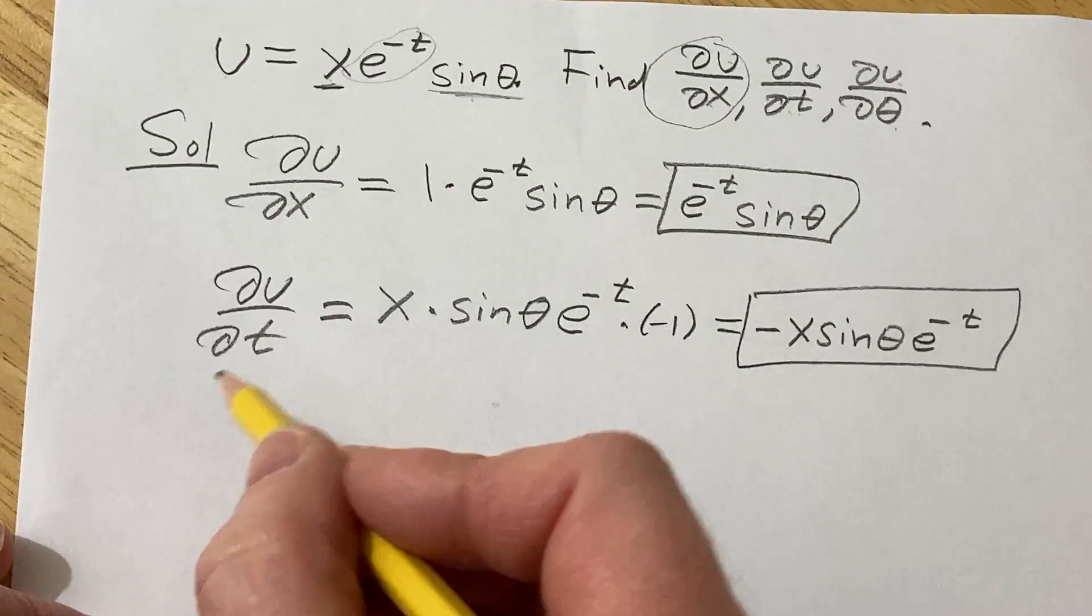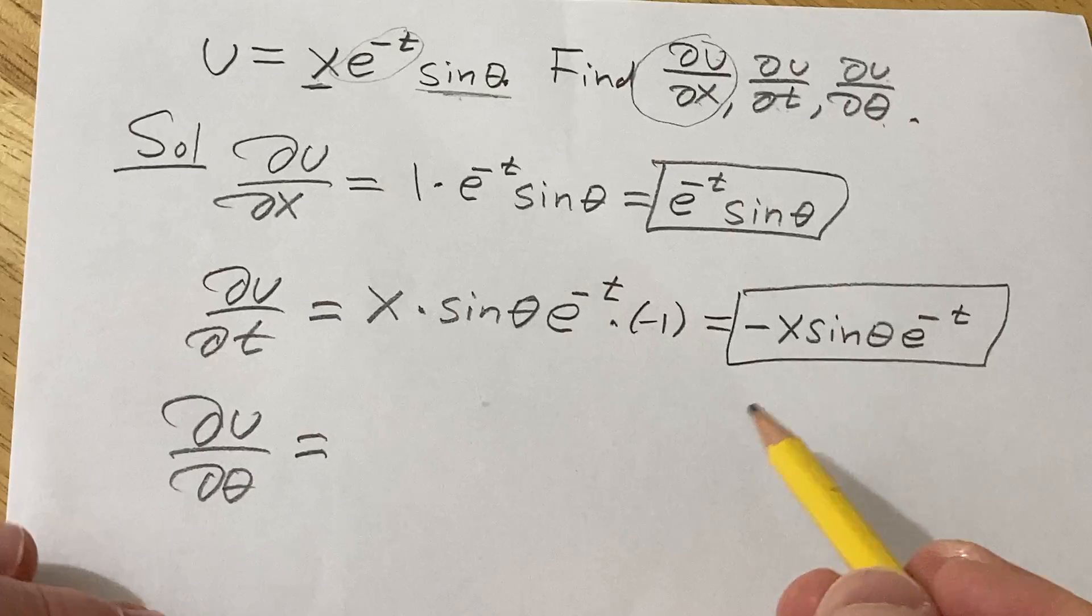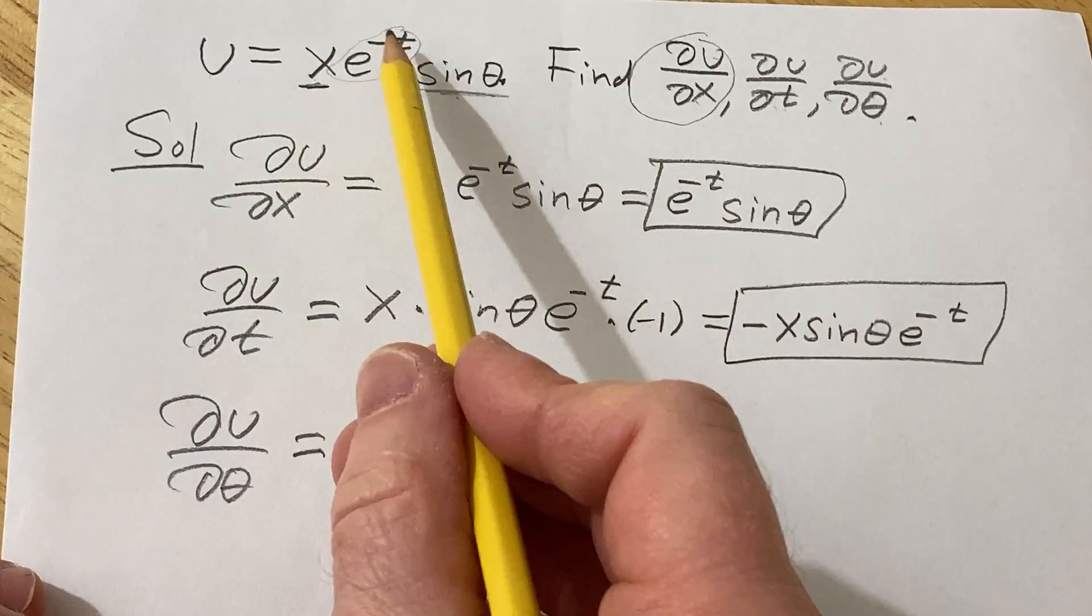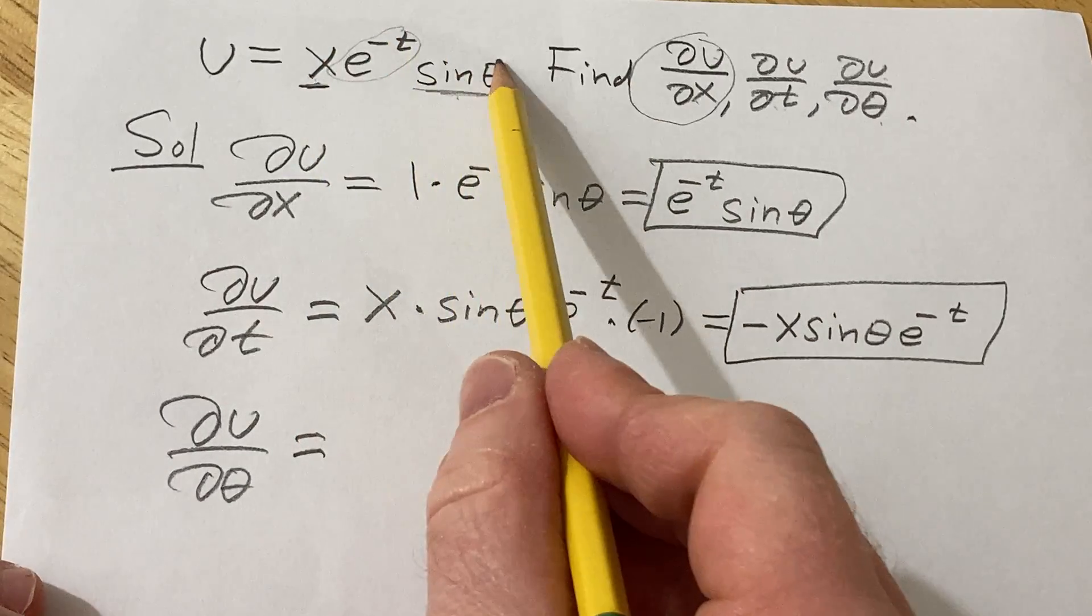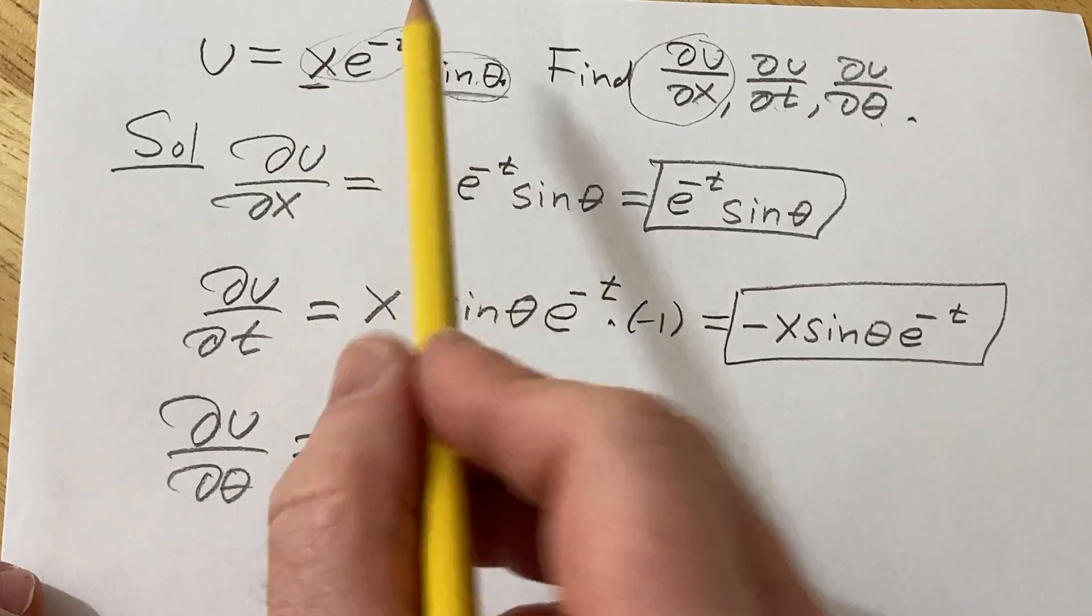The last one is ∂u/∂θ. So let's find that one. So in this case, we're treating all the x's and t's as constants. So basically we're finding the derivative here with respect to theta. So this is a constant. It hangs out.